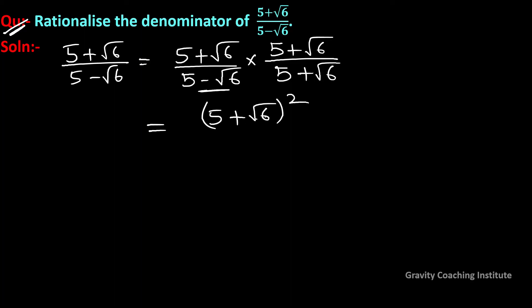Since both terms are identical in the numerator, we can write it as a whole square. We will use the identity (a + b)(a - b) = a² - b².